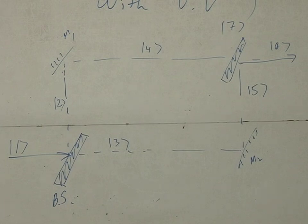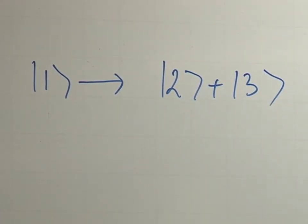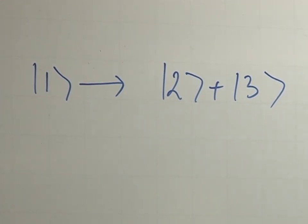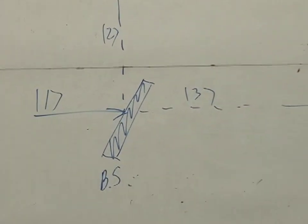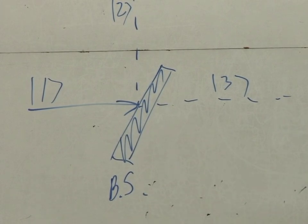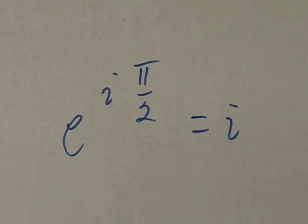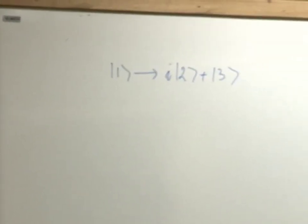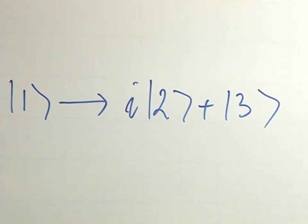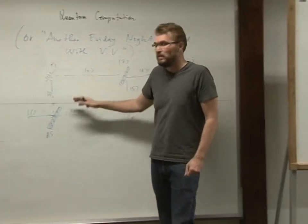The first beam splitter sends a photon in state one into an equal superposition of two and three. If you really want to be completely pedantic, you should include the phase. When light reflects off a medium at 45 degrees, there's a phase that the photon gains — basically e to the i times the angle. In this case the angle is pi/2, which is just the root of minus 1. So this guy here gets a factor of i. You don't have to include it; you can get rid of the phase if you really like. Now I'm going to follow what state two does, and independently follow what state three does.